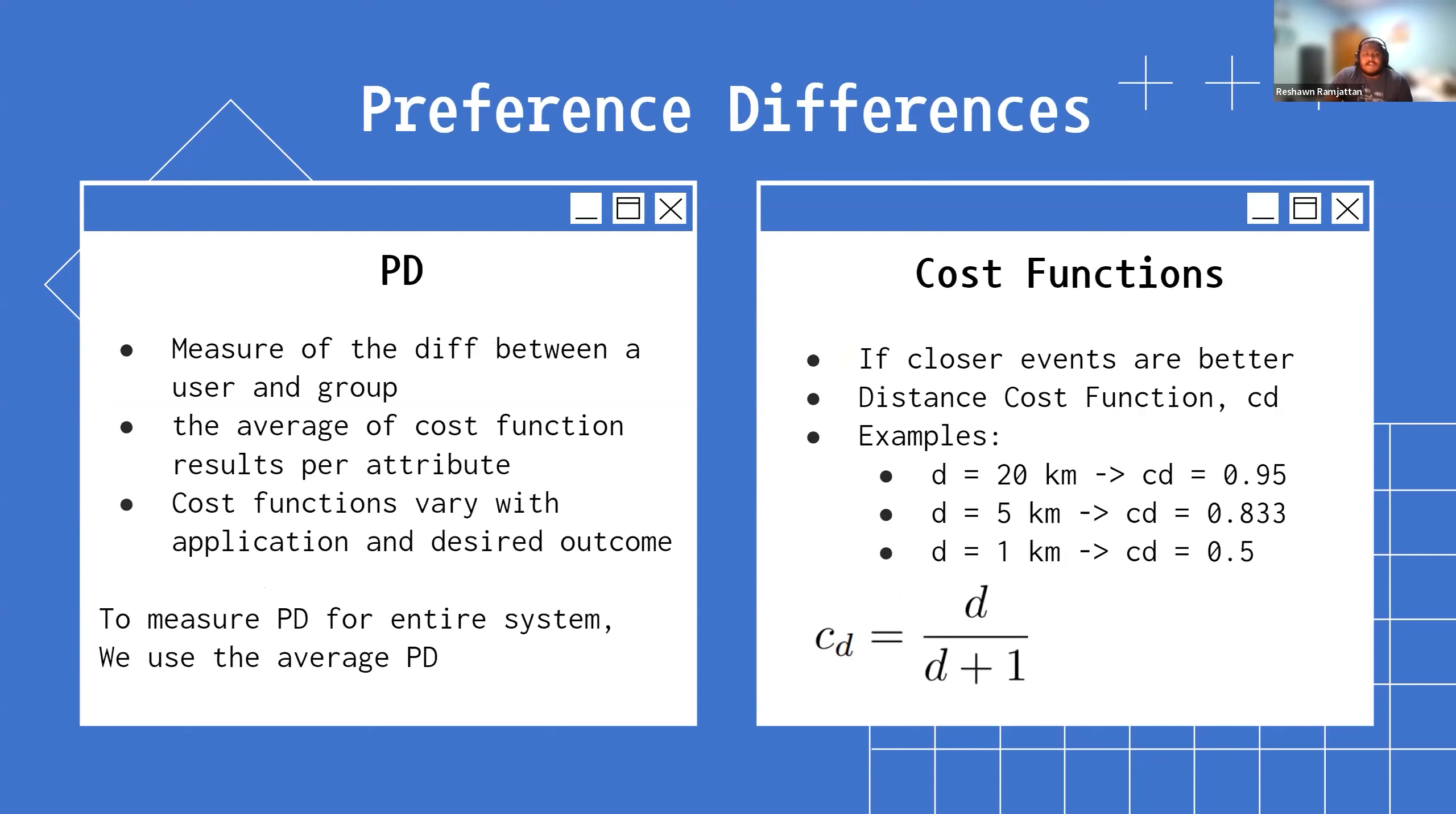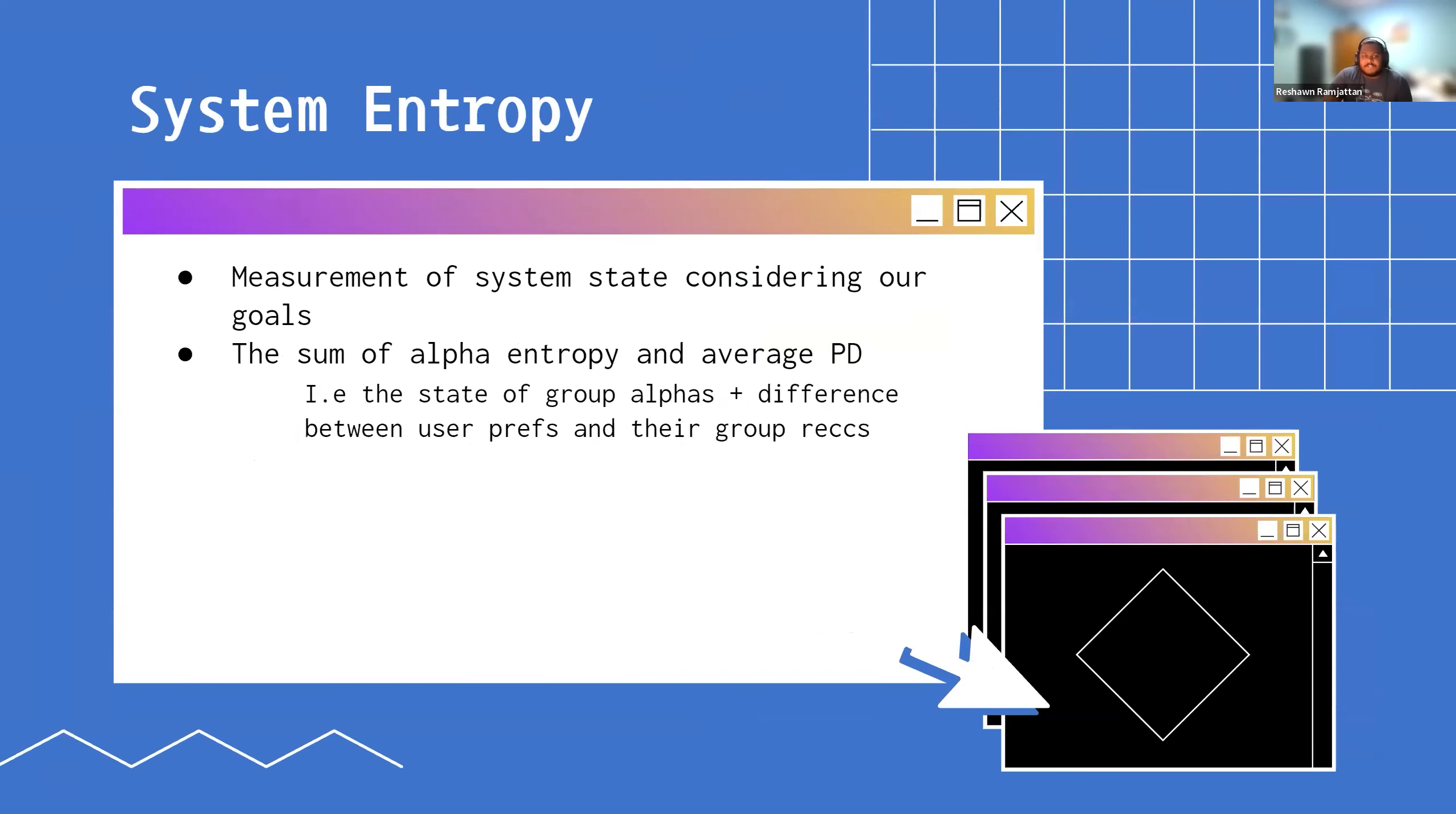On the other side, when we're looking at the quality of the matches, this is a bit closer to the typical cost functions you'll see. This is just about taking an average of all of the different features our system has. Every feature, we might want to calculate the difference between what a user wants or what a group or party will have in different ways. Let's say a feature is distance. People want to find events or parties that are close to them. Then the distance cost function could look something like d over d plus 1, so that the further away you are, the higher the cost. Closer, lower the cost. Then we just take the average of these cost functions for all the features across the entire system to get a single value. We have a single value for the alpha and a single value for the quality of matches. We add those two and that is how we represent the state of the system. We're looking at the spread of users and the quality of the matches.